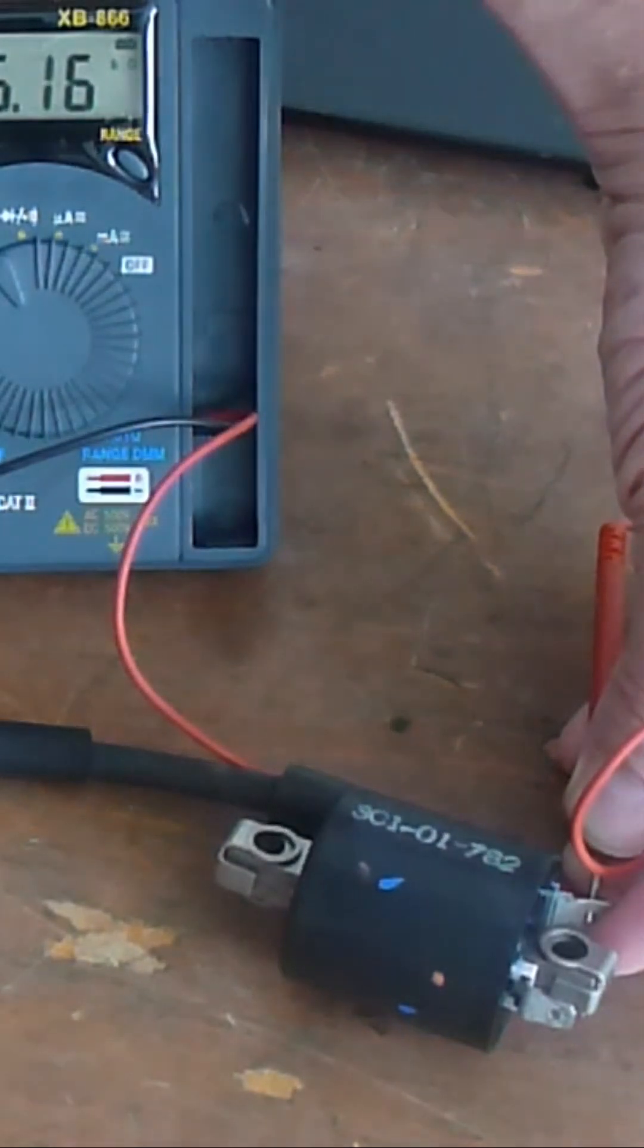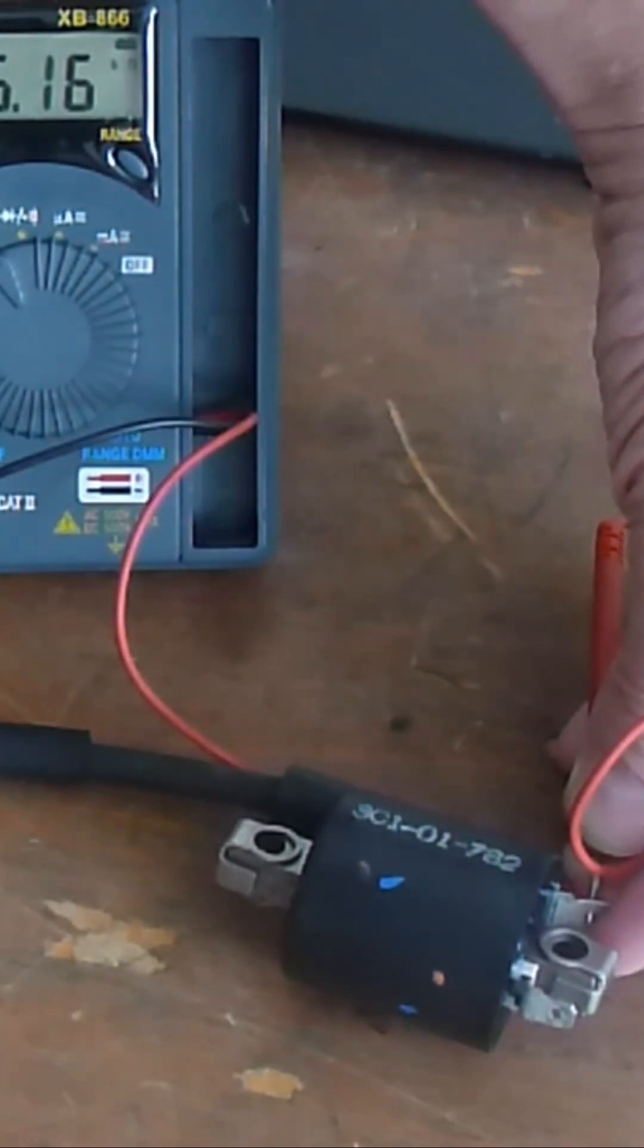And that one is 16 kilo-ohms, so 16,000 ohms, and that is a good reading. You always have more windings on the secondary to obviously boost the voltage.